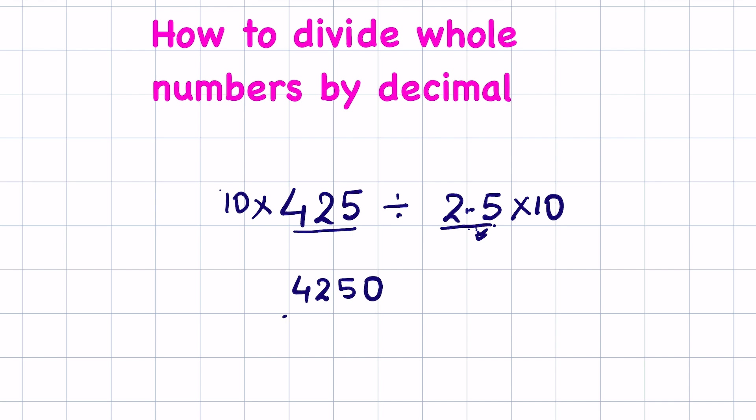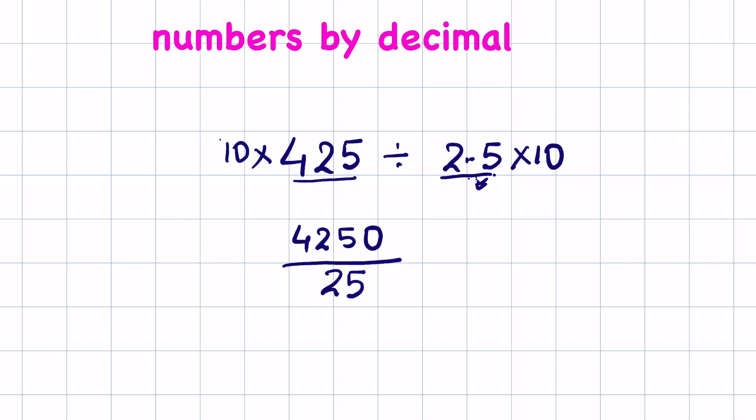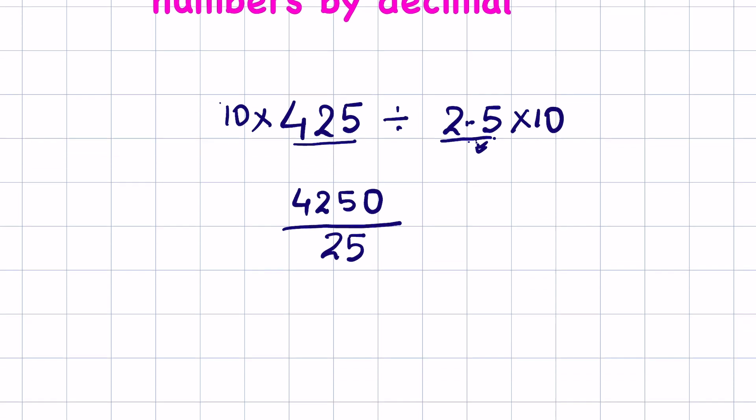And this will be 25. Now this is your number that you have to divide. Now here you can reduce the fraction or use the long division method. Since 25 is divisible by 5 and 4250 has 0 at the end, so it is divisible by 5.